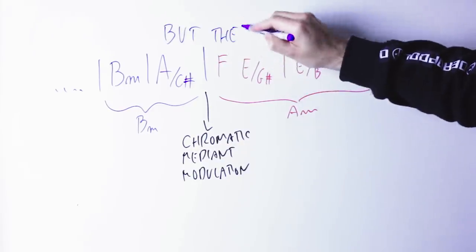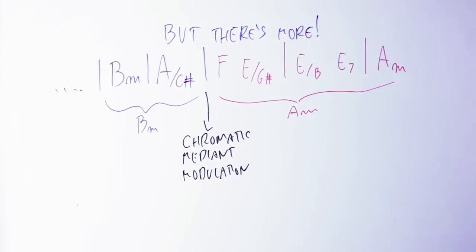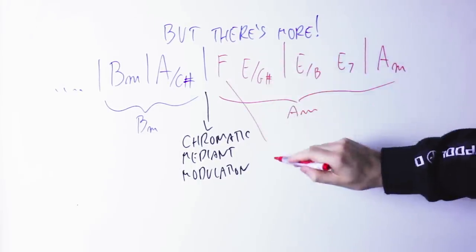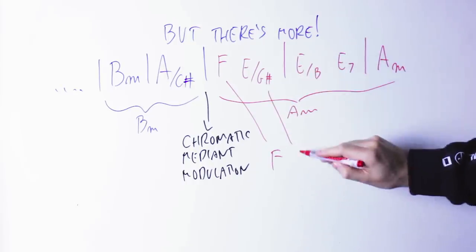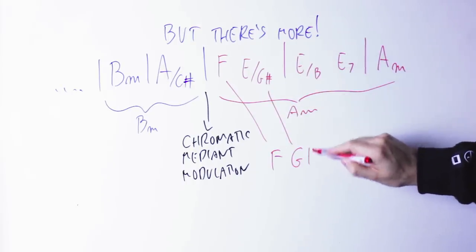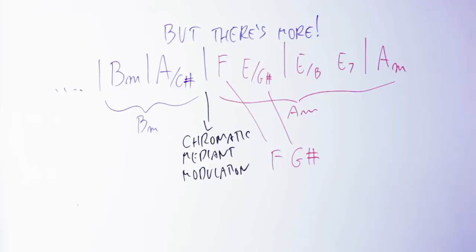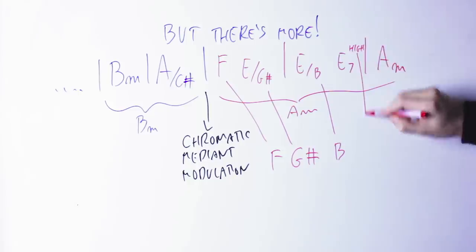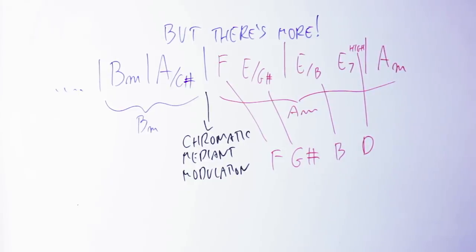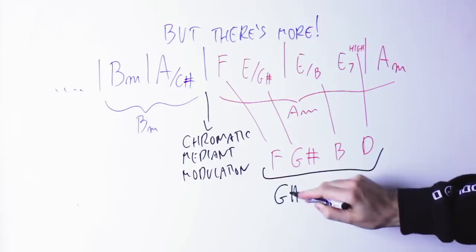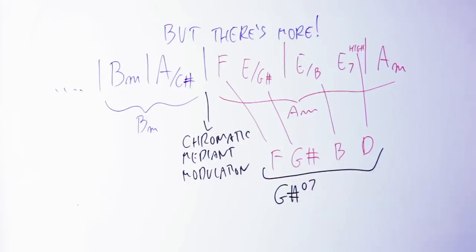But there is more than that. If you take the bass notes of the F and E parts, the notes are those. We have an F note, then a G sharp note, then a B note, and then we take the high note, that is a D note, and if we collect all those notes together we have F, G sharp, B and D. Those notes put together spell a G sharp diminished 7th chord.